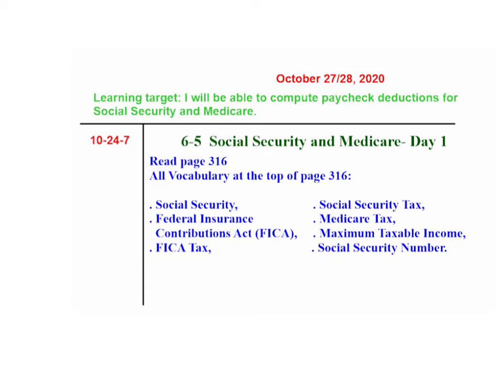Please read page 316 and define these vocabulary words: Social Security, Federal Insurance Contributions Act or FICA, the FICA tax, Social Security tax, Medicare tax, maximum taxable income, and Social Security number.